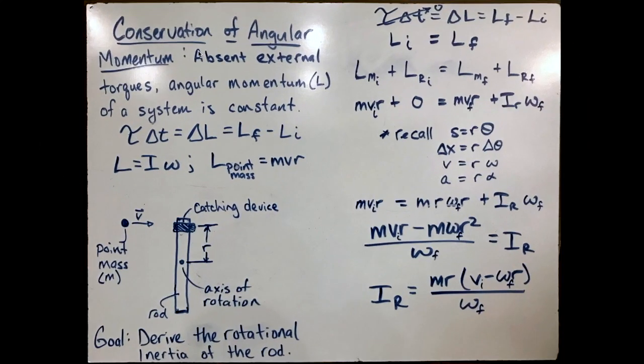Okay, Wildcats. So welcome back. Here I have my derivation for the rotational inertia of the rod that's going to end up spinning. So in order to find the rotational inertia of the rod, we have to choose an area of physics to apply. Well, there's going to be a collision between the projectile and the rod. And so momentum is always a good way to solve, it's really the only way to solve any collisions.